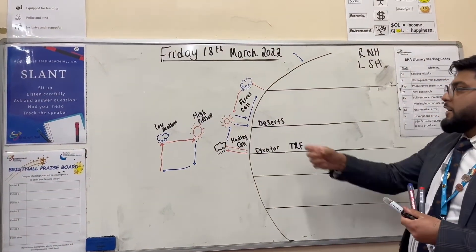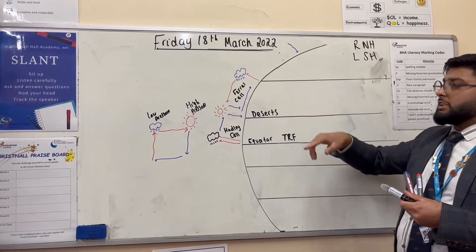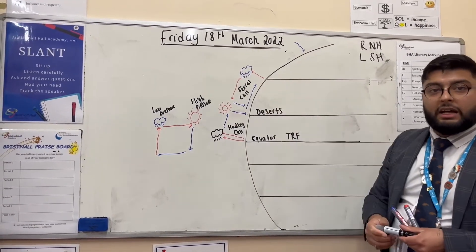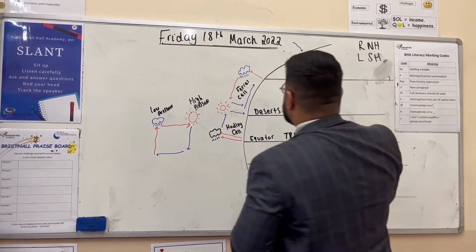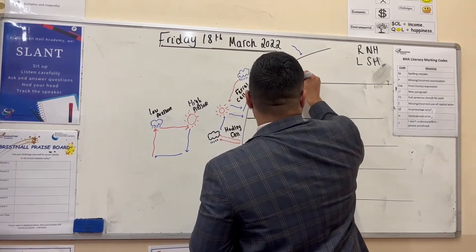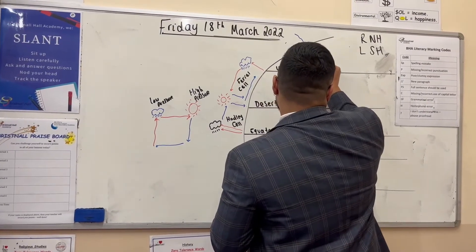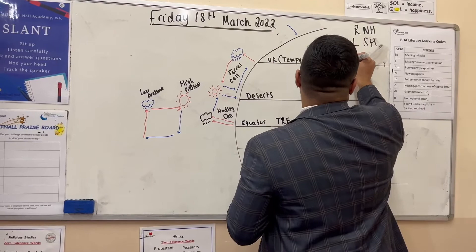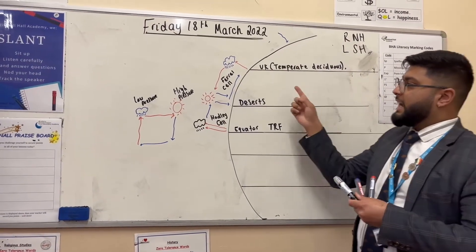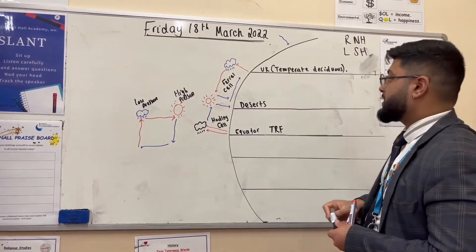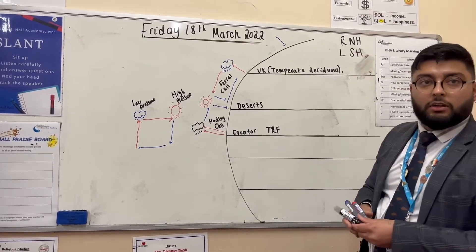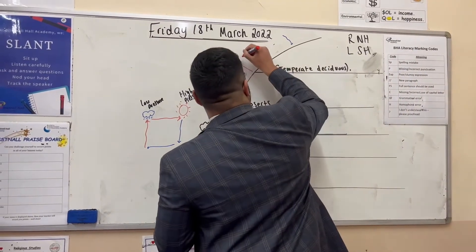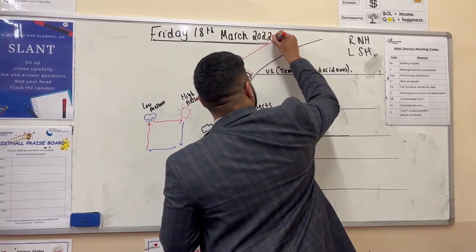We need to think of a place that is quite far away from the equator, probably closer to the Arctic Circle, that is very wet and rainy. This is where we have the UK, or temperate deciduous forest. Because the air is rising it's forming clouds, and that leads to a lot of rain — so we get the UK climate here.